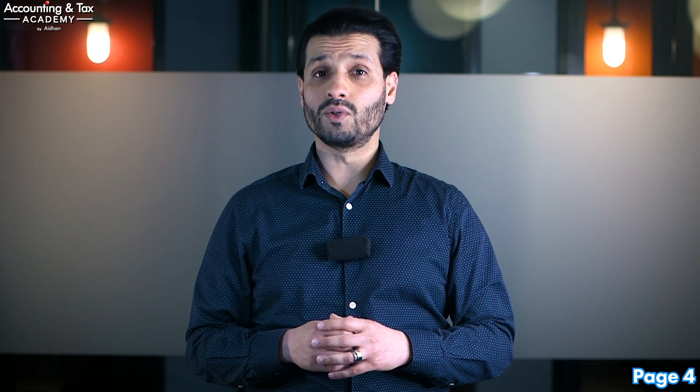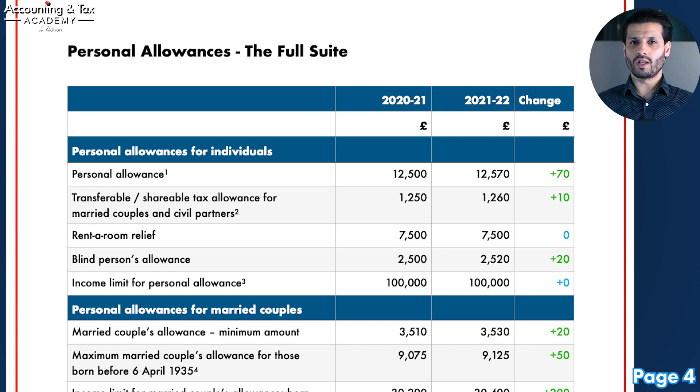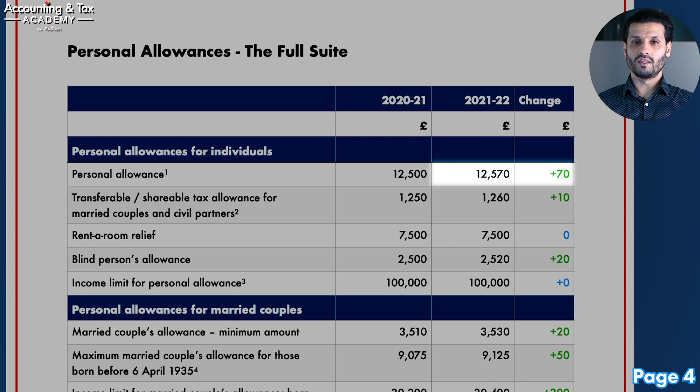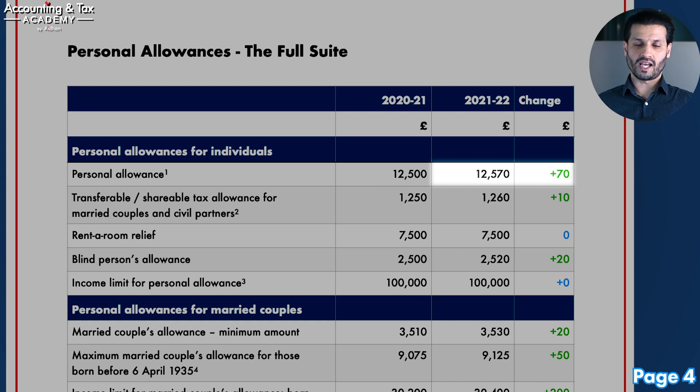This is quite an important section as you as a UK tax resident person has available to them some personal tax-free allowances. Certain non-UK residents can also claim these UK personal allowances too. Refer to page four of our handout — the standard individual personal allowance has increased to £12,570 per annum in the 21-22 year, up £70 from the last tax year, meaning you can earn up to £12,570 completely tax-free.